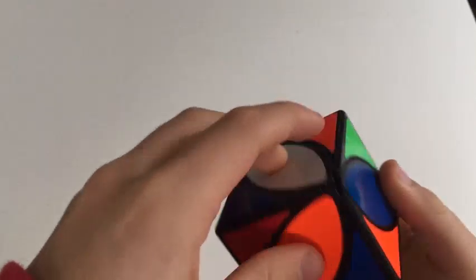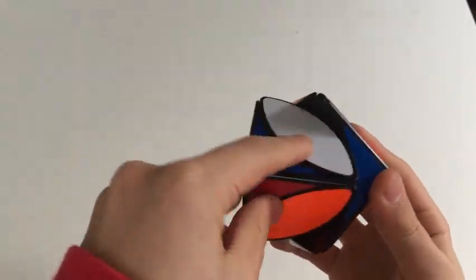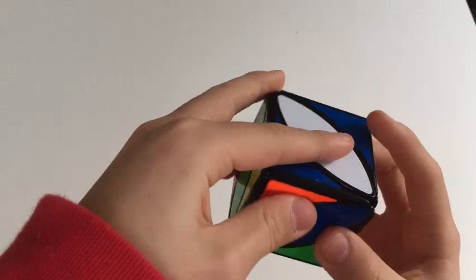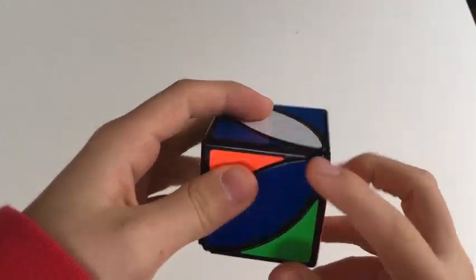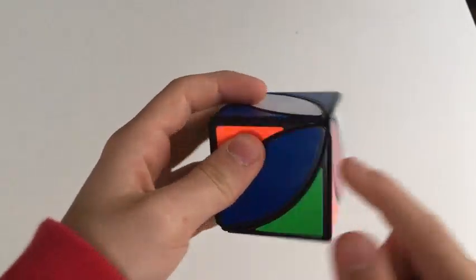So we're going to start by solving the blue side. You want something that looks roughly like this, with the middle piece, the leaf piece, either here or here.